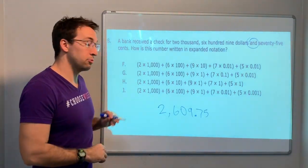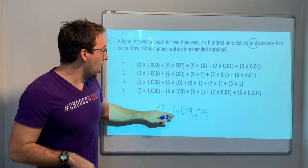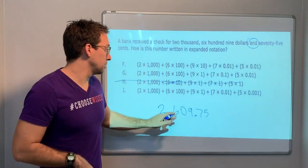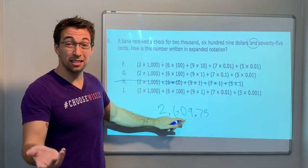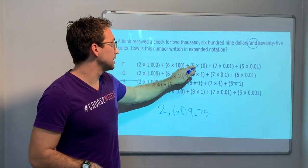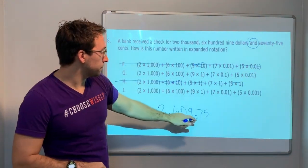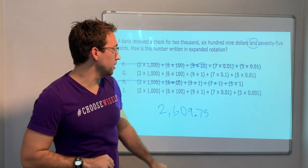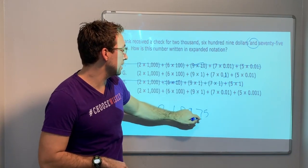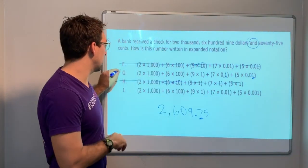2,000, so 2 times 1,000. Great. All of these are the same, so we're good. 600. So it's not 6 times 10. So it's not H. Is there a tenths place? No. 9 is 1. So 9 times 1. It's not 9 times 10, because that would be 90. It's not F. Then 7 times 0.1. Yes, that's it, because we're in the tenths place. The 7 is in the tenths place. And then 5 times 0.01 in the hundredths. Our answer is G.